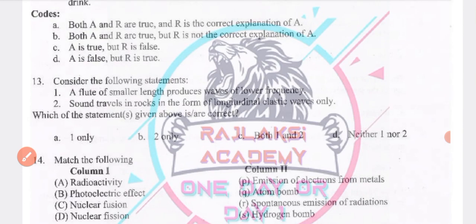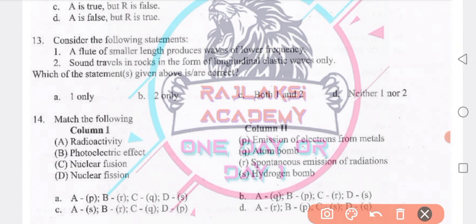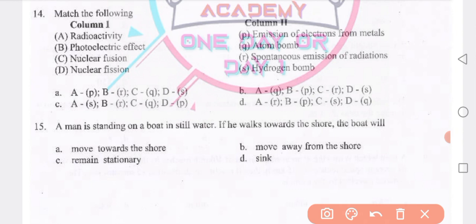Consider the following: a flute of smaller length produces waves of lower frequency. Sound travels in the form of longitudinal waves — only statement 2 is correct. Match the following: radioactivity — spontaneous emission of radiation; photoelectric effect — emission of electrons from metal; nuclear fission — atom bomb; nuclear fusion — hydrogen bomb. Option A is the right answer: A=P, B=R, C=Q.